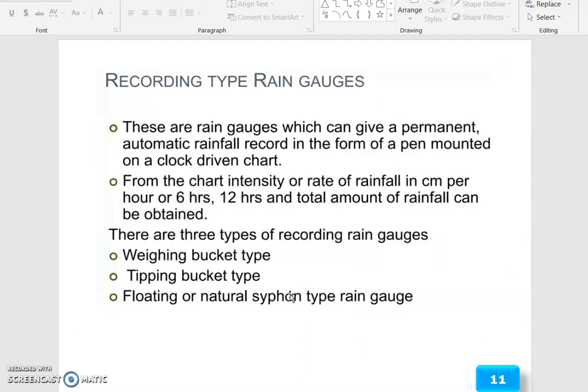The recording type rain gauges. These are rain gauges which can give a permanent, automatic rainfall record in the form of a pen mounted on a clock-driven chart. From the chart, intensity or rate of rainfall in cm per hour, or 6 hours, 12 hours, and the total amount of rainfall can be obtained.